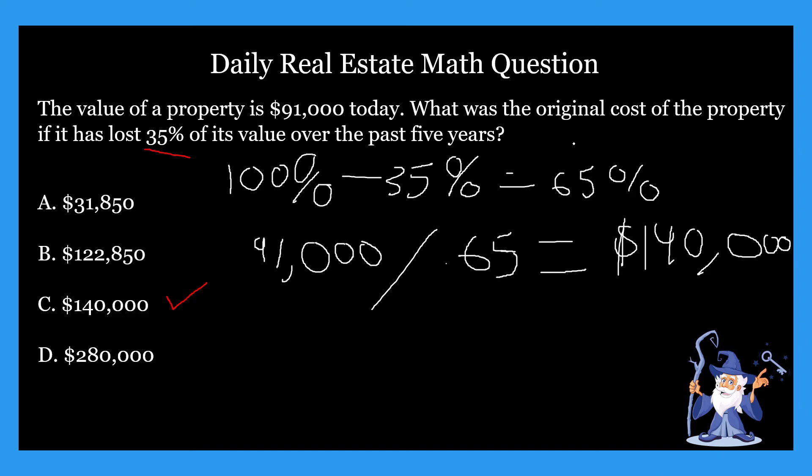Alternatively, you could divide the value of the property today by each answer option individually to find out which option matches 65%. But personally, I think that way takes longer. If you prefer that approach, no biggie.